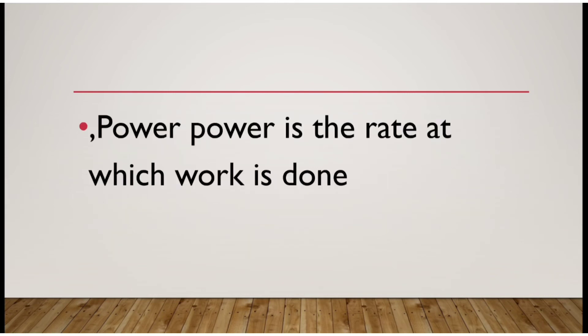The last topic of this chapter is power. Power is the rate at which work is done. On page number 27, the formula is: Power = Work / Time. The SI unit of work is joules, so the unit of power is joule per second, which is called watt. One horsepower is equal to 746 watts.